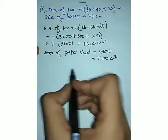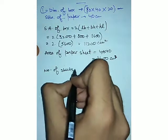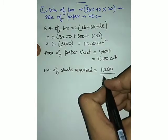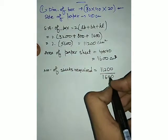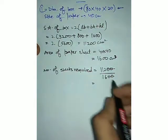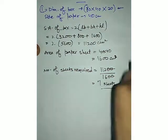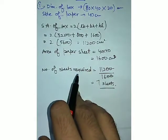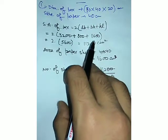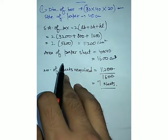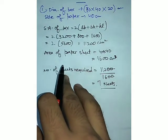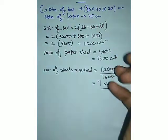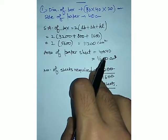To find the number of sheets required, we divide the surface area of the box — 11200 — by the area of one sheet — 1600. Cancelling two zeros, 11200 ÷ 1600 = 7. So seven sheets are required to cover the cuboidal box. In the next example we again divide the surface area of a bigger object by the area of a smaller object, but there we calculate the lateral surface area because the top face is excluded.